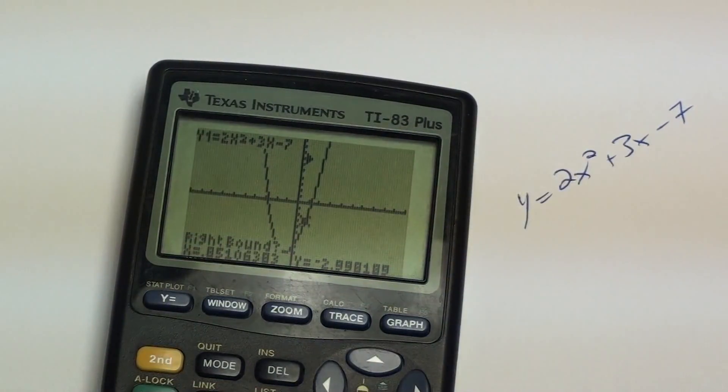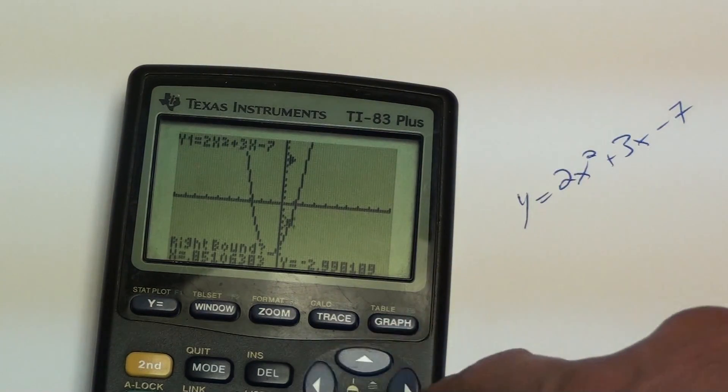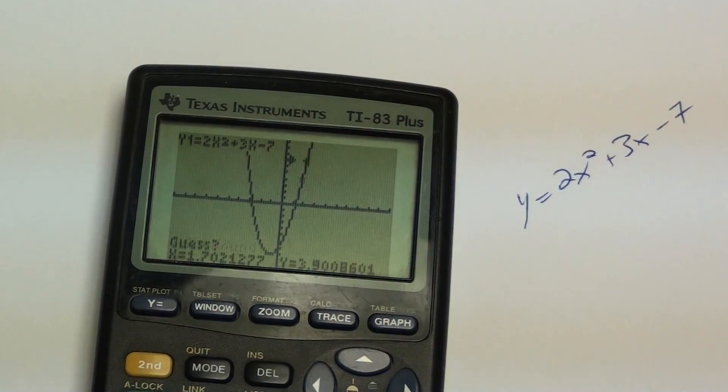And then it's going to ask you to do the same thing again. But this time to the right of the x-intercept. So I use the arrows, the left and right arrows, to scroll over. So you're just on the right of it. Hit enter.